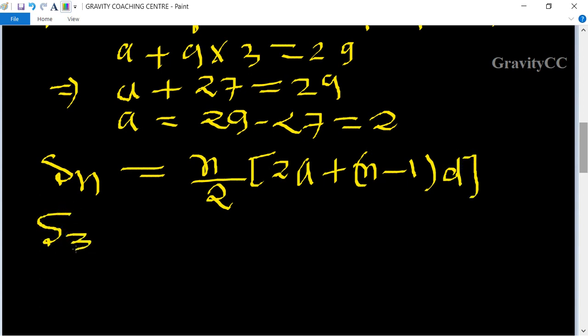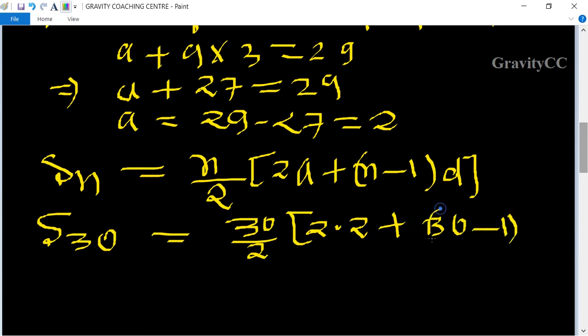So to find the S₃₀ term, S₃₀ = (30/2)[2×2 + (30-1)×3] = 15[4 + (29)(3)].